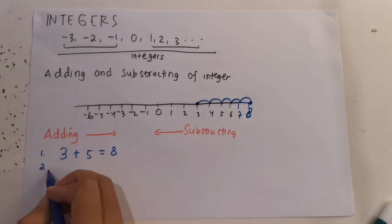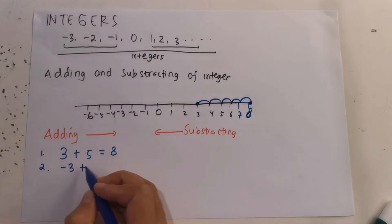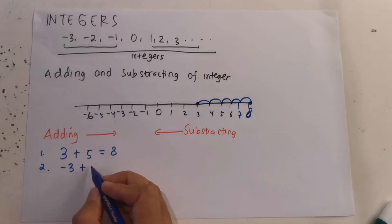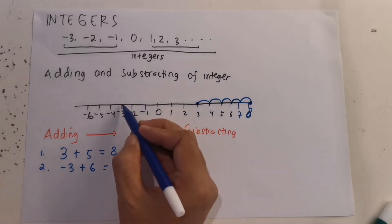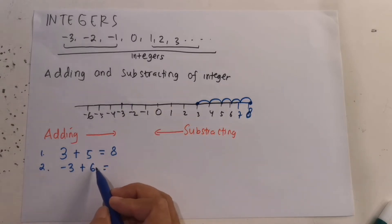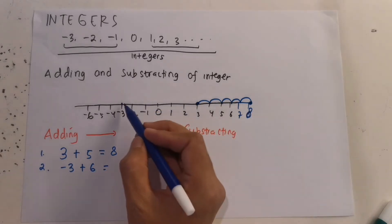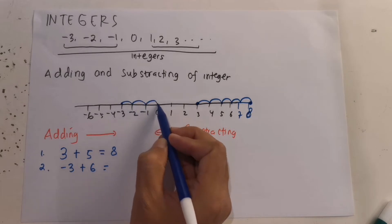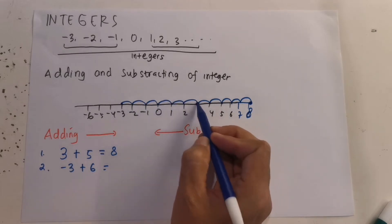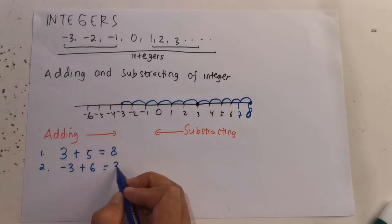Example 2: negative 3 plus 6. We start from negative 3. Because this is adding, we move 6 places to the right — 1, 2, 3, 4, 5, 6 — and we end at number 3. So the answer is 3.